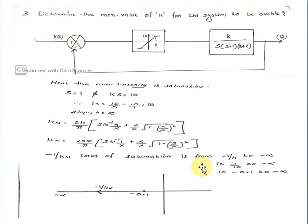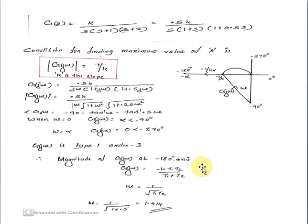The minus 1 by KN locus is from minus 1/K to minus infinity, that is from minus 0.1 to minus infinity. The transfer function is G(s) equals K by [s into (s+1) into (s+2)], which in standard form is 0.5K by [s into (1+s) into (1+0.5s)]. The modulus of G(jω) equals 0.5K by [ω into root(1+ω²) into root(1+0.25ω²)], and this equals 1 by K at the stability condition.